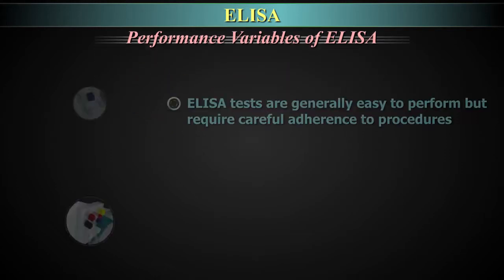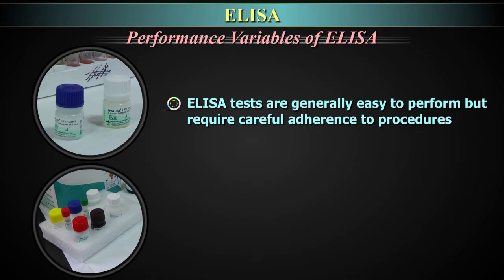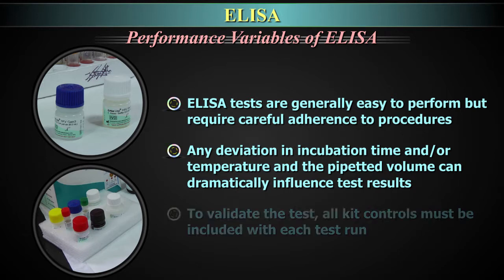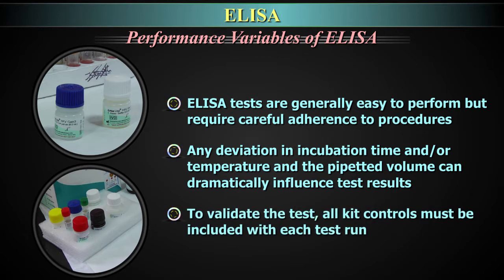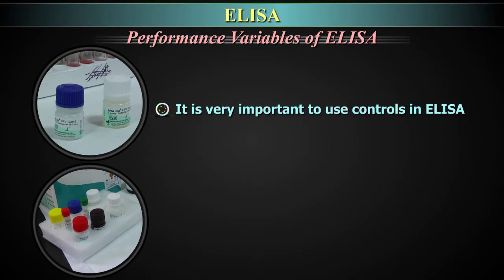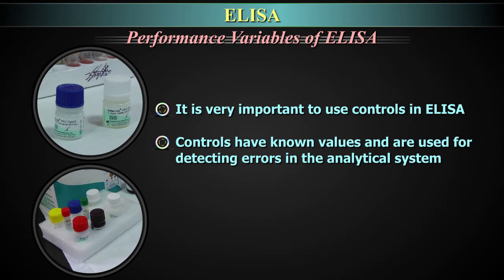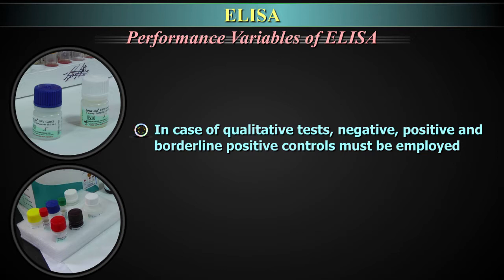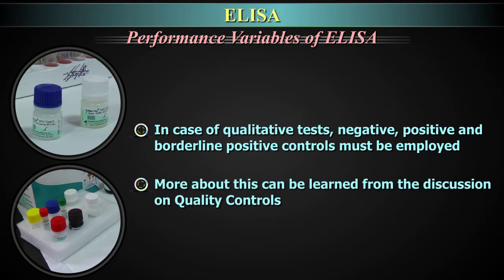Performance variables of ELISA. ELISA tests are generally easy to perform but require careful adherence to procedures. Any deviation in incubation time or temperature and the pipetted volume can dramatically influence the test results. To validate the test, all kit controls as specified in the kit insert must be included with each test run. It is very important to use controls in ELISA. Controls have known values and are used for detecting errors in the analytical system. In case of quantitative tests, all clinical decision levels should be checked with controls. In case of qualitative tests, negative, positive and borderline positive controls must be employed.